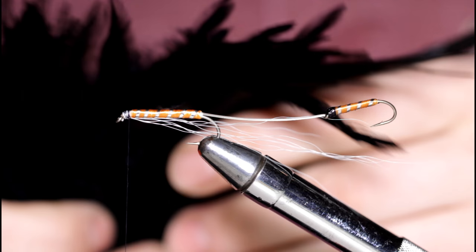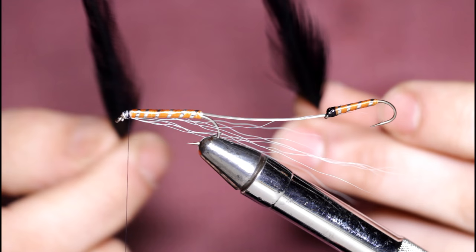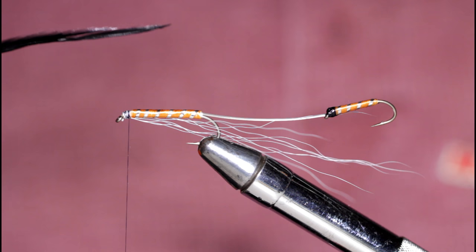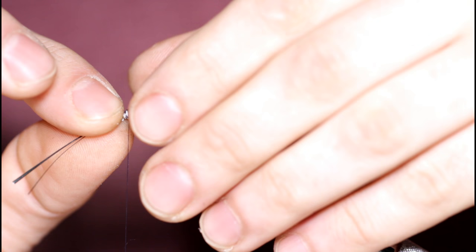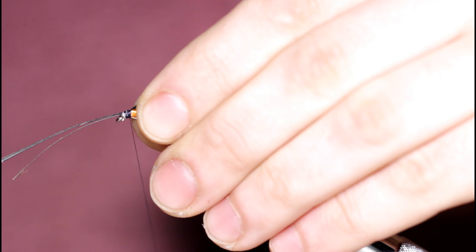Now I'm going to grab some Chinese strung rooster saddle in black. And I'm going to grab four of these feathers that have about the same curvature to them and about the same length and width. And I'm going to join the feathers together in pairs. So I've got two here and I'm just going to tie these on and work my way down towards the hook eye and bring my thread back.